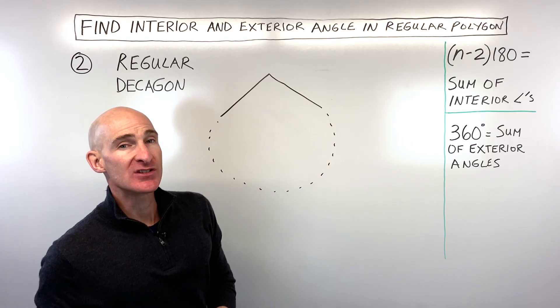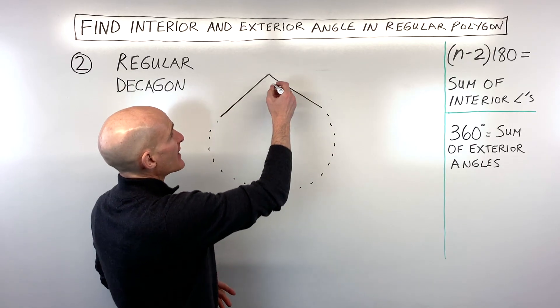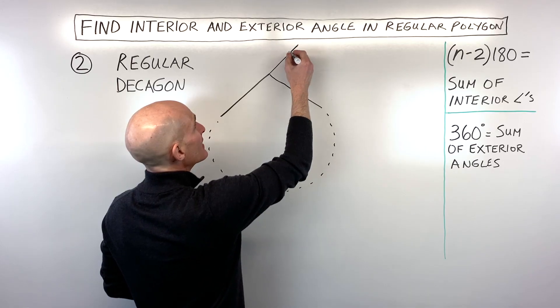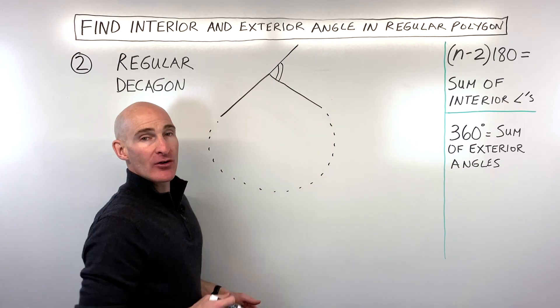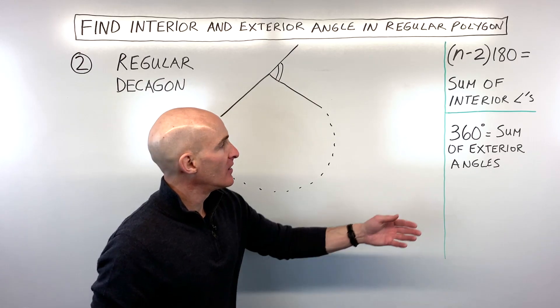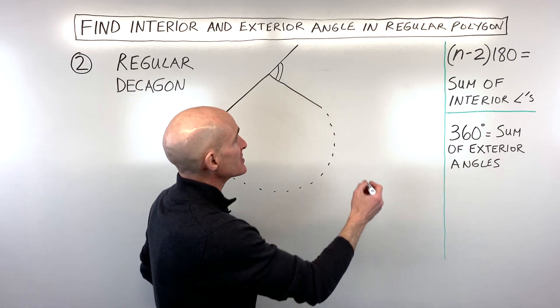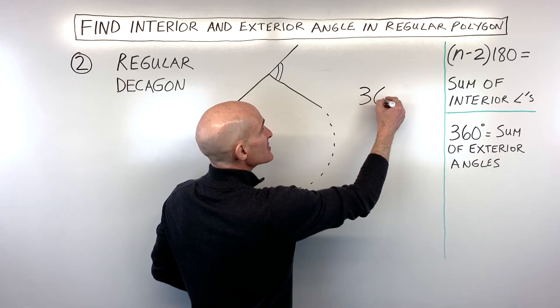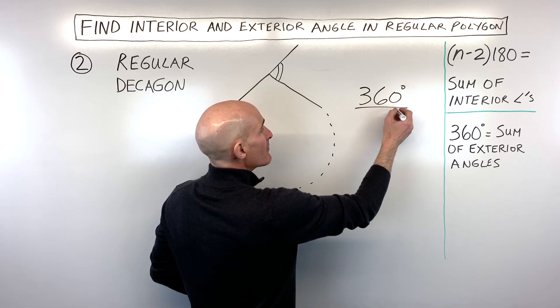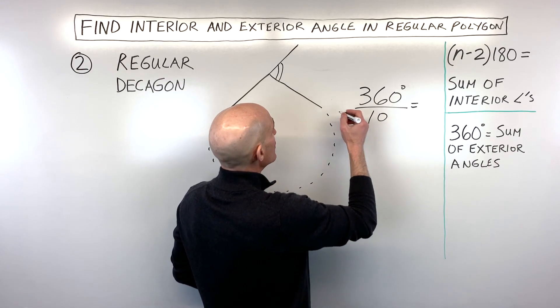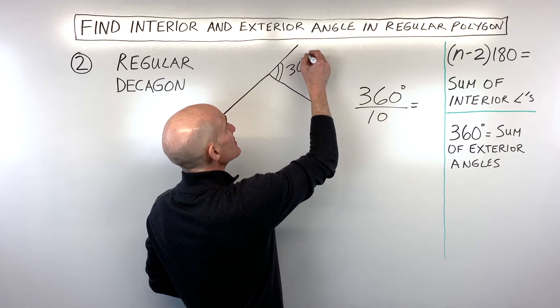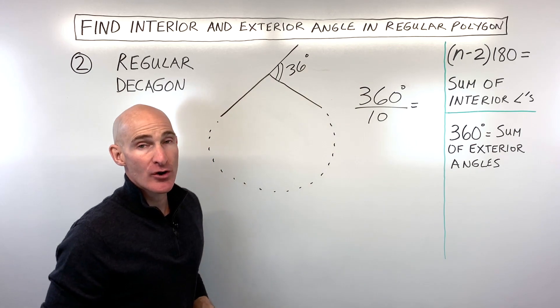So again, two different options. This time what I'm going to do is I'm going to start with the exterior angle. So I'm going to extend this side, I'm going to look at this exterior angle, and I know that all the exterior angles always add up to 360 degrees. So let's go ahead and take 360 degrees divided by the 10 exterior angles, and that's going to give us a measure of 36 degrees for our exterior angle.